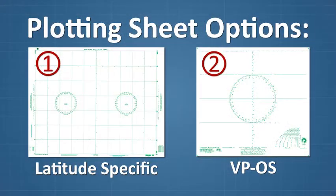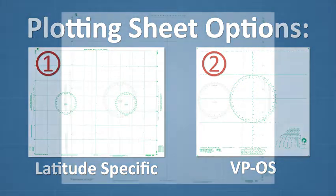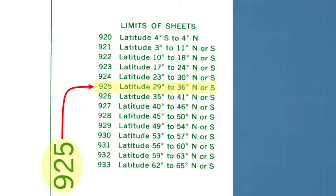There are two practical options for plotting sheets. Latitude-specific plotting sheets comprise a Mercator grid for a specific range of labeled latitudes, applicable in both northern and southern hemispheres. Meridians have to be labeled to cover any desired range of longitudes.